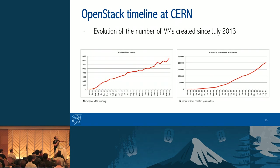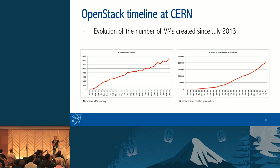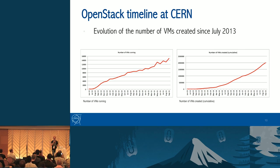This is the evolution of the number of VMs running in our cloud during the last two years since we tagged it production. We went from zero to 16,000 VMs — and now we actually have more than 60,000. The first plot shows active running VMs and the second shows the total number of VMs created over time. In September we reached VM number 2 million, which for us was quite an achievement.